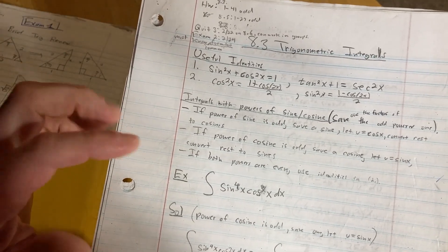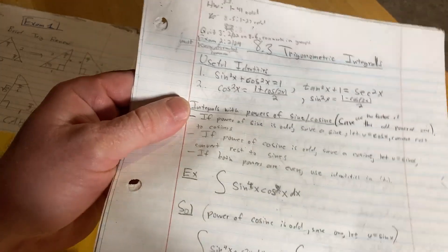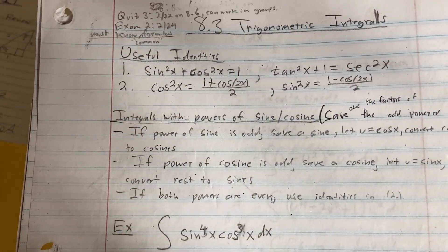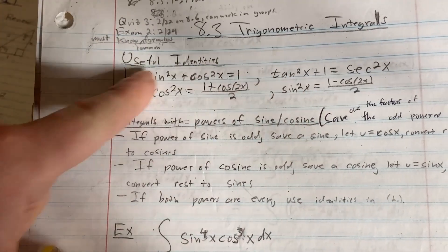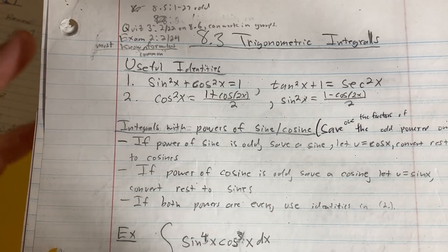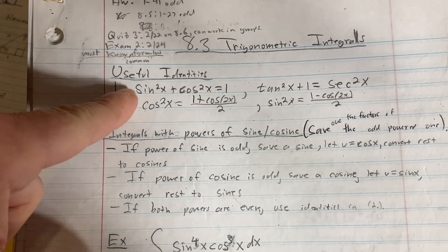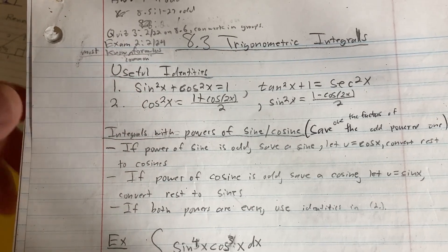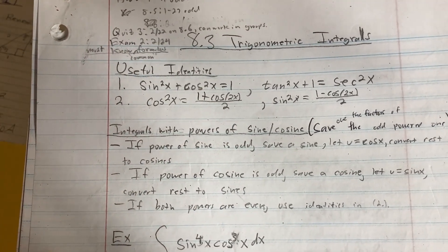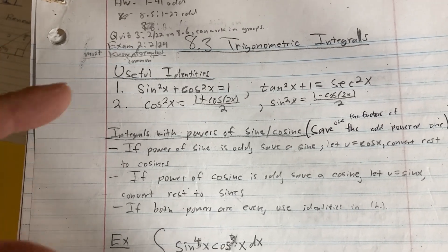And if you do that, what happens is you end up working extra hard. So here are some useful identities. If you're taking Calc 2 or thinking about taking Calc 2, these are identities that you should memorize. I know that a lot of people, including myself, are anti-memorization, or at least I used to be, but these are ones you should know. For example, sine squared plus cosine squared equals 1 — absolutely vital. I always joke that you can fail trig, but you'll know that identity.